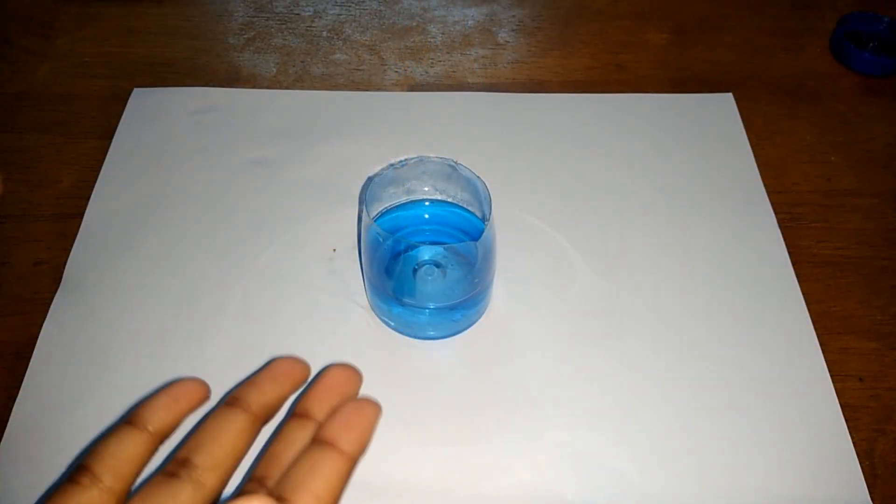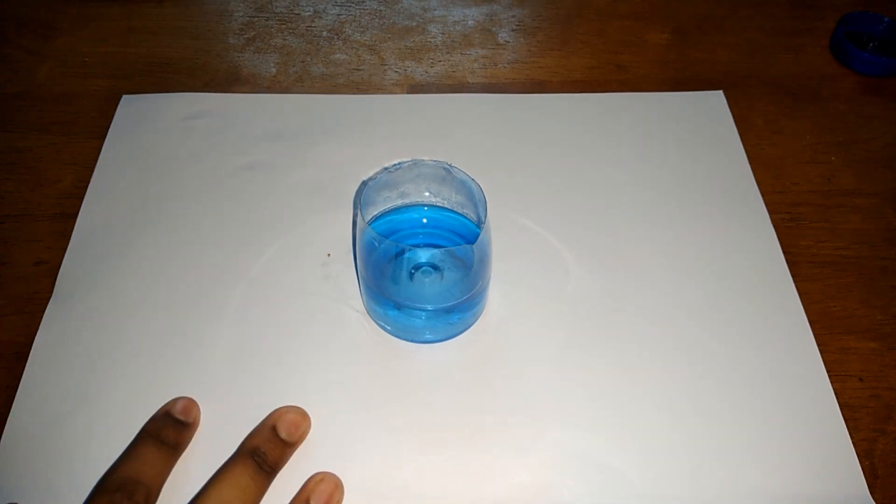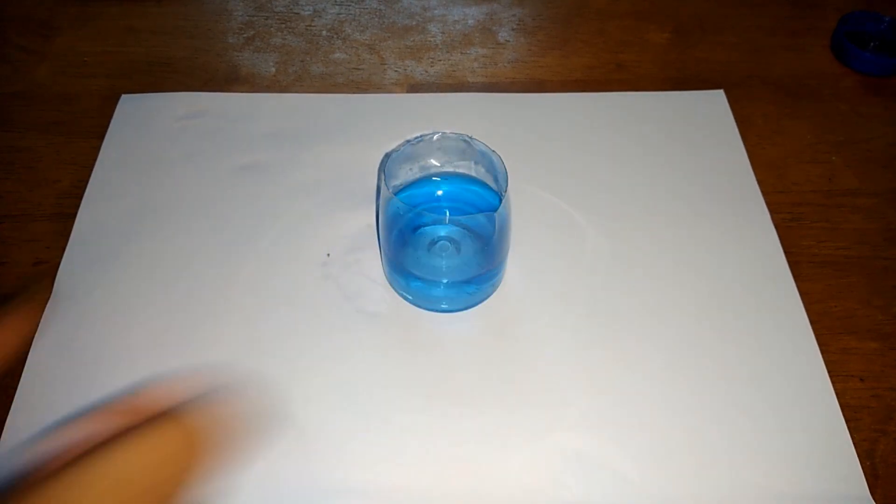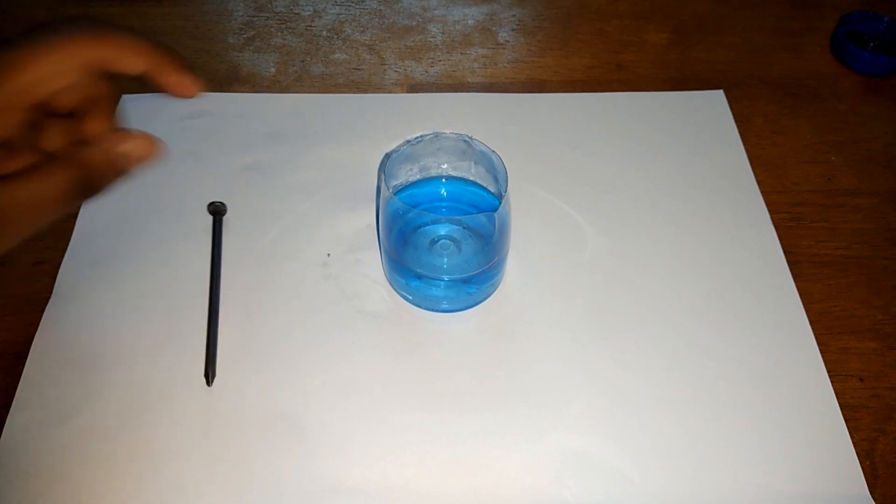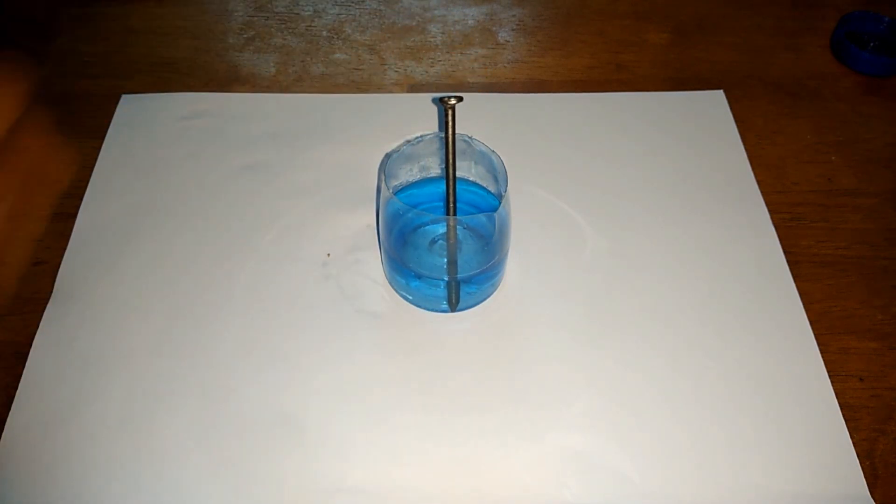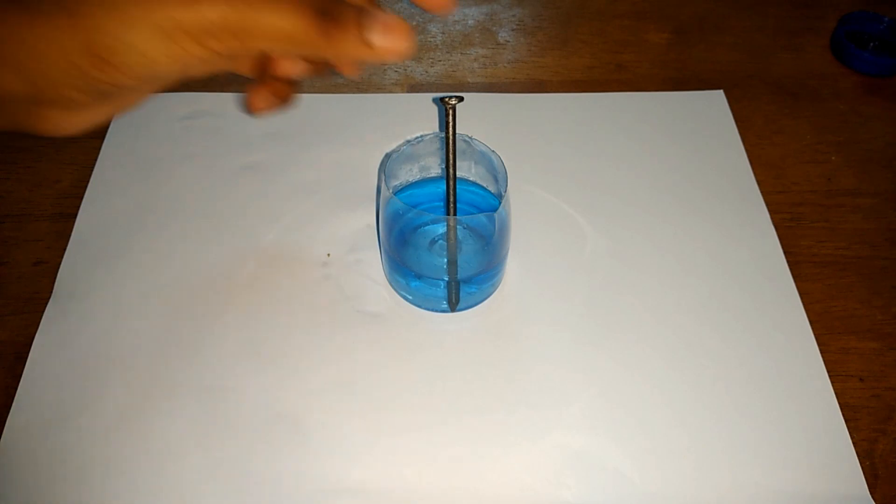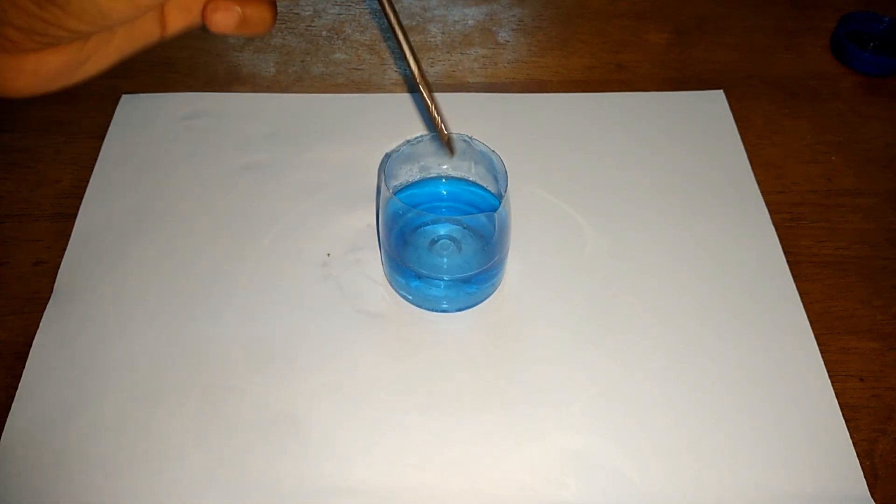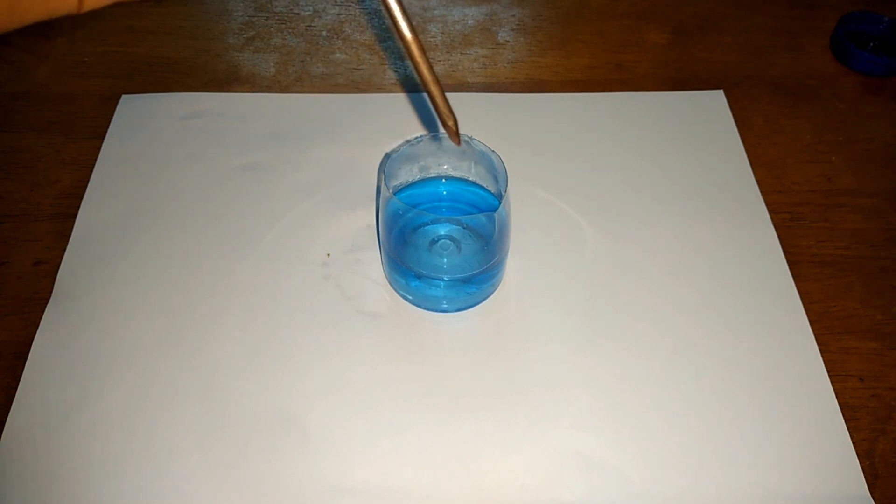So now that the copper sulphate has dissolved completely, I have added a white paper here to show you the proper blue colour. And now, I am going to add my iron nail. And if I take it out, you can see that there is already a slight brown deposition here.